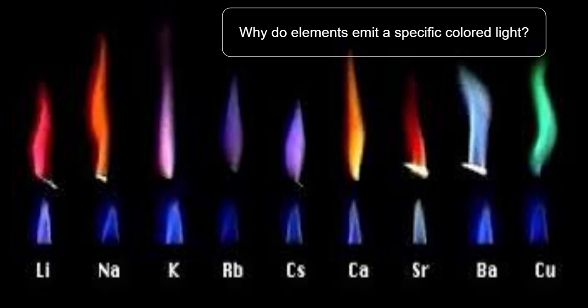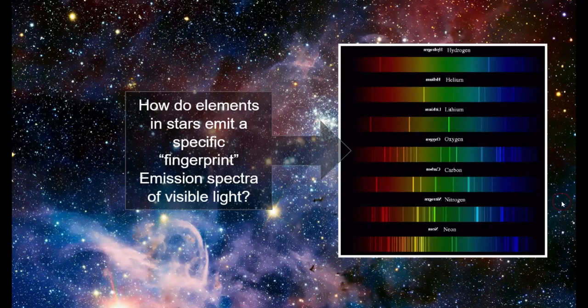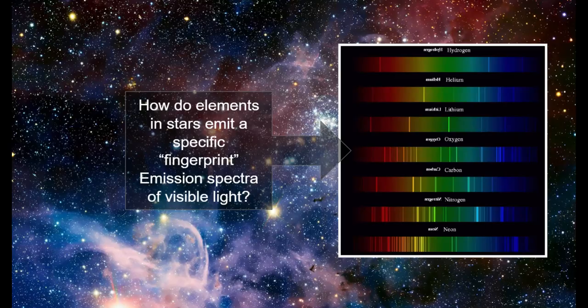So Niels Bohr got to thinking. Why do elements emit specific colored light? For example, like when we did the flame tests, why do certain elements emit certain colors? Similarly, if we take a look at elements and their emission spectra, their fingerprints of visible light from stars, why do they emit specific bands of light?